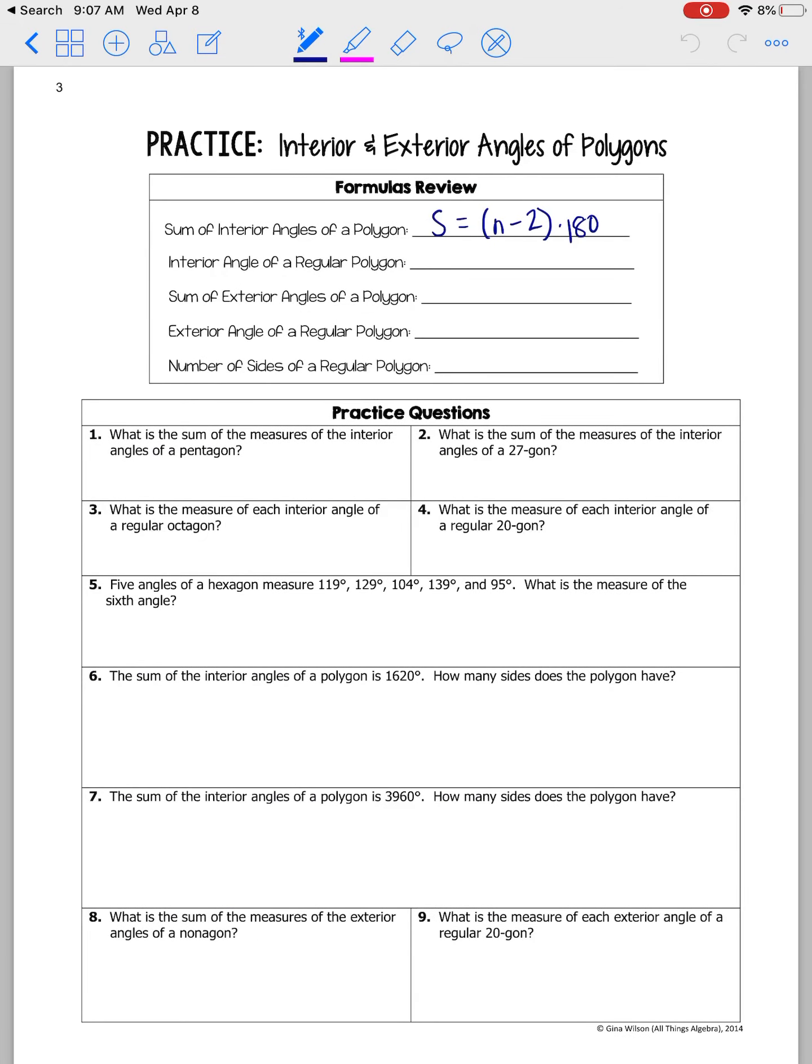Next we have the interior angle of a regular polygon. So a regular polygon is one in which all of the sides are congruent and all of the angles are congruent. So like a square, or an equilateral triangle. So if you know the total number of degrees of that polygon, which you can find using the formula for S, then you're just going to put that number over the number of sides or angles.